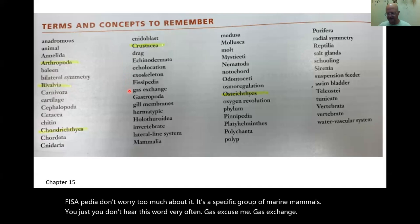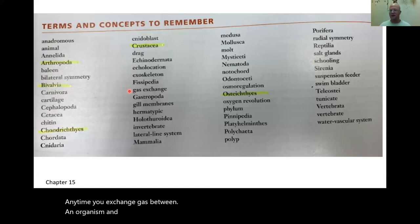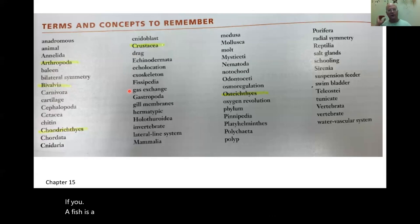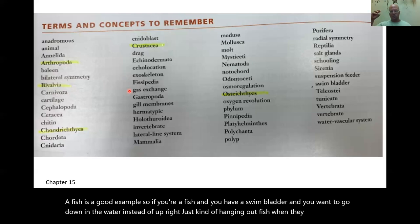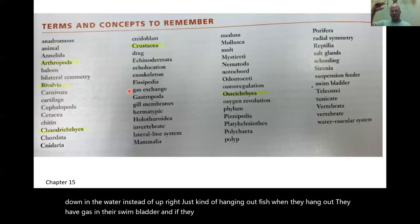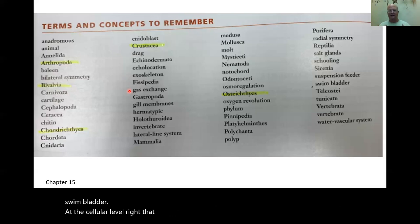Gas exchange is anytime you exchange gas between an organism and its environment. A fish with a swim bladder is a good example: if the fish wants to go up in the water, it increases the gas; if it wants to go down, it decreases the gas. At the cellular level, gas is being moved in and out of the swim bladder — that's gas exchange.